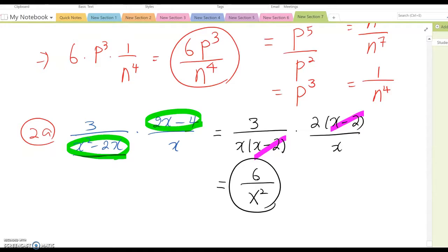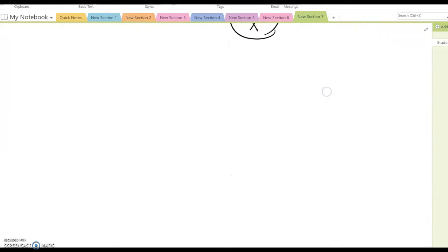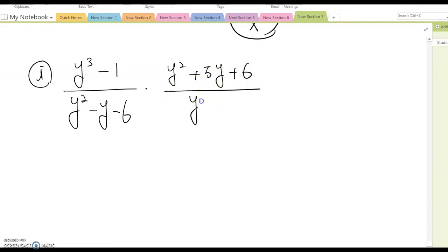Let's do a little bit harder one. It shows (y³ - 1) over (y² - y - 6), multiply (y² + 5y + 6) over (y² - 1). As you see, they are all binomial or trinomial, which means you have to factor before simplifying.